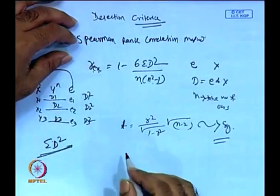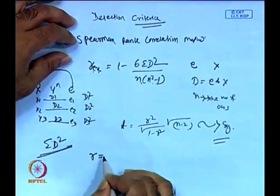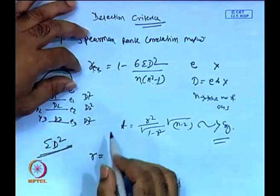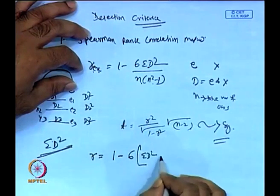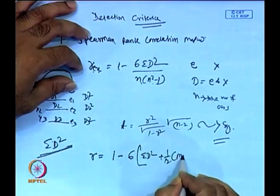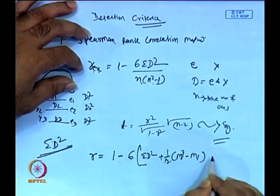The rank correlation method is a beautiful technique but has specific considerations. One important case is when there are tied ranks. If the same rank appears for multiple observations, the basic formula cannot be used. Instead, use: r = 1 − [6Σd² + (1/12)(m1³ − m1) + (1/12)(m2³ − m2) + ...] / [n(n² − 1)], where m1, m2, etc. represent the number of tied observations in each group.